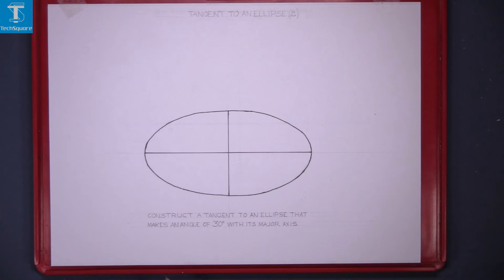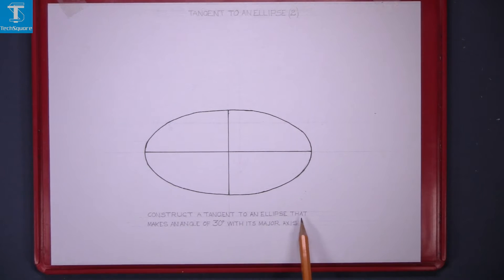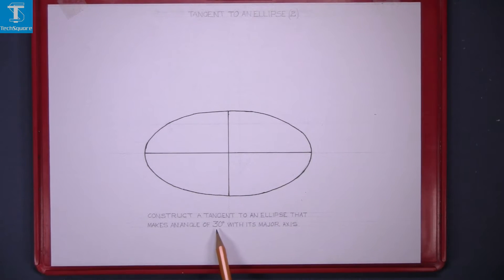Tangent to an ellipse 2. Construct a tangent to an ellipse that makes an angle of 30 degrees with the major axis.